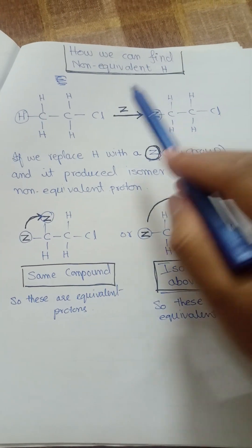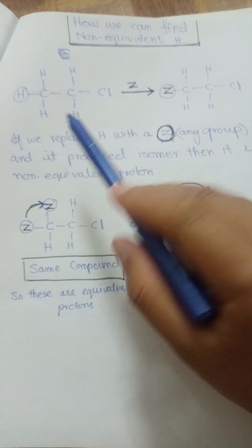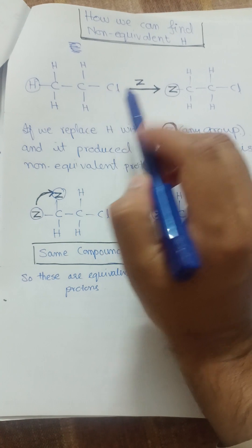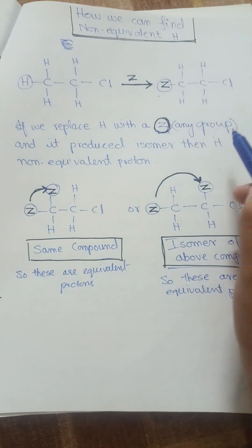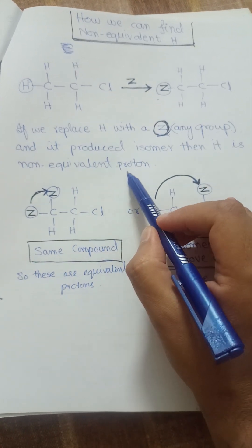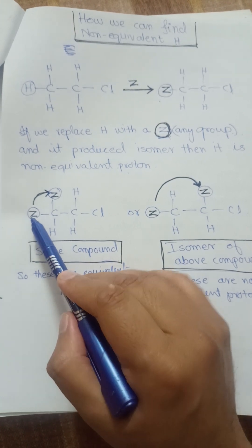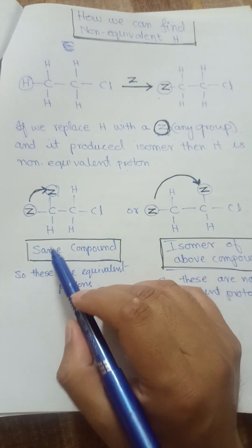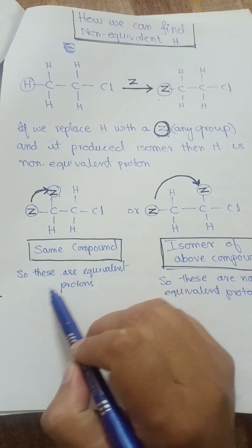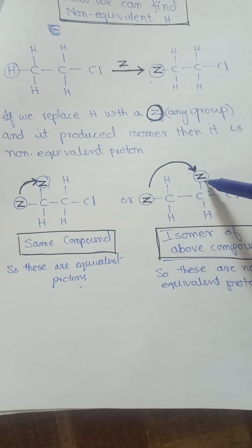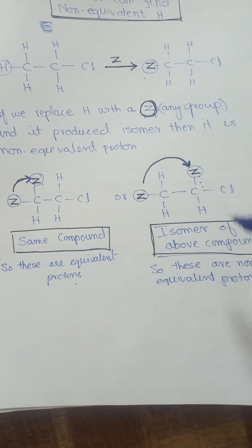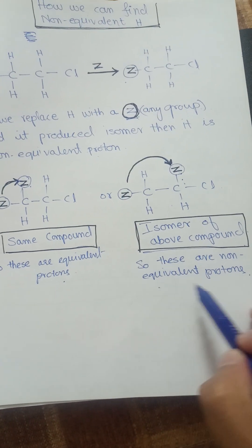In another example of the substitution test: if a hydrogen is replaced with atom Z and an isomer is produced, those are non-equivalent protons. If replacing the atom at a given position produces the same compound, then those protons are equivalent. If replacing the atom produces an isomer, then those protons are non-equivalent protons.